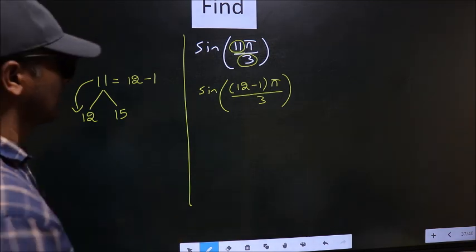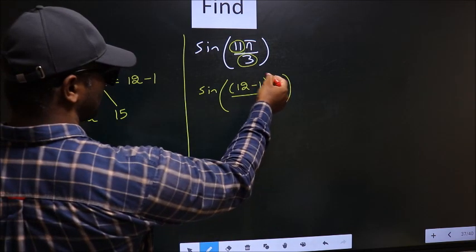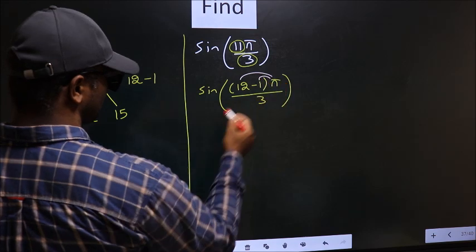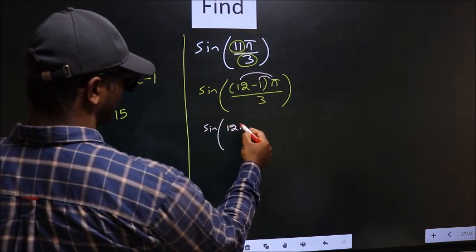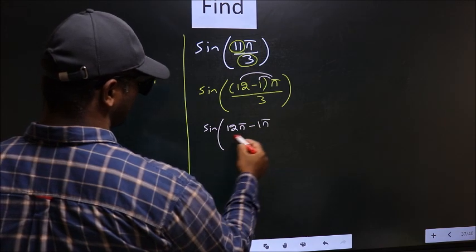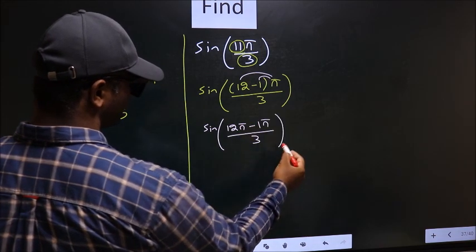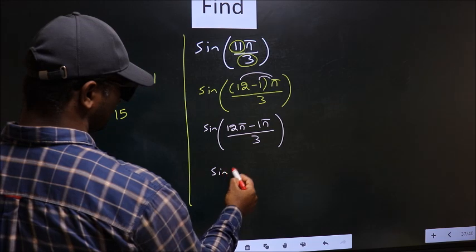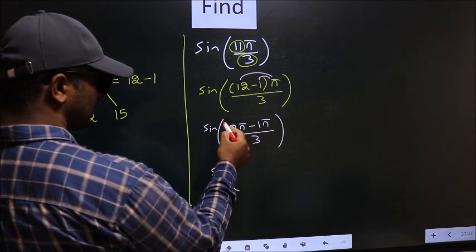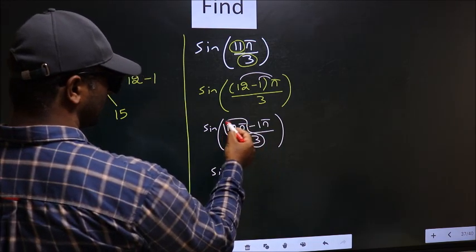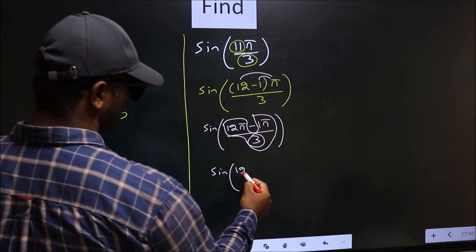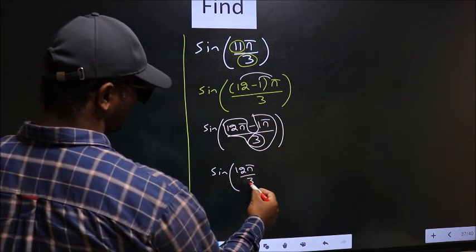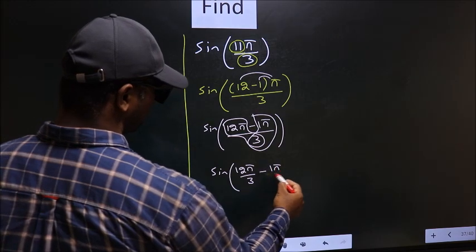Next, you should open up the brackets. So you get sin 12π minus 1π by 3. Now you should split the denominator in this way, that is 12π by 3 minus 1π by 3.